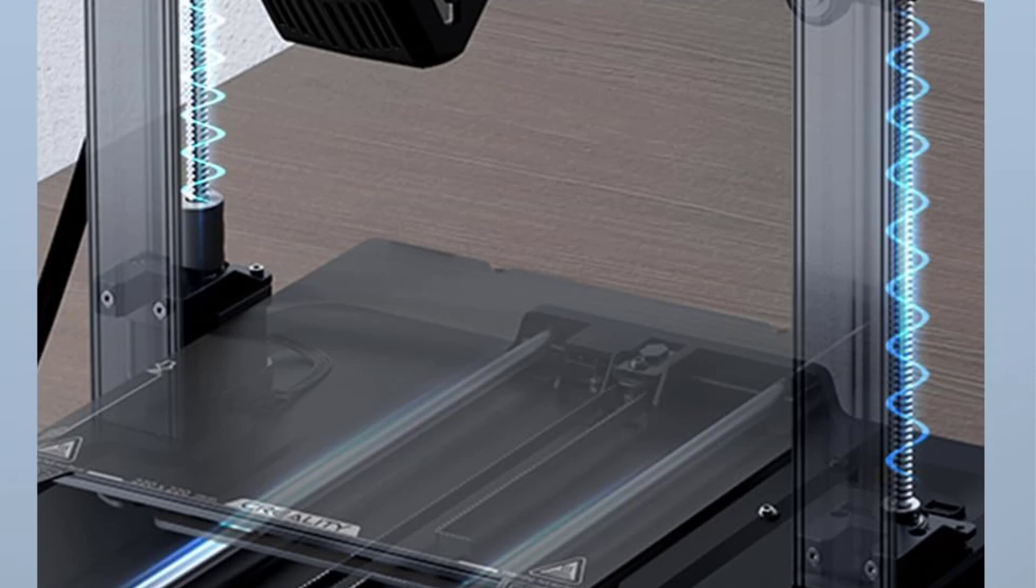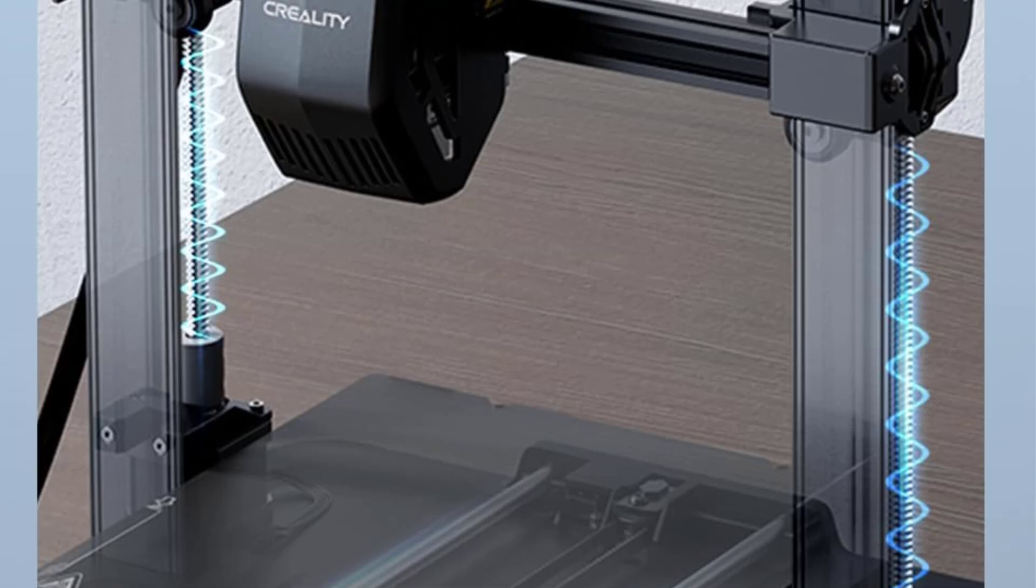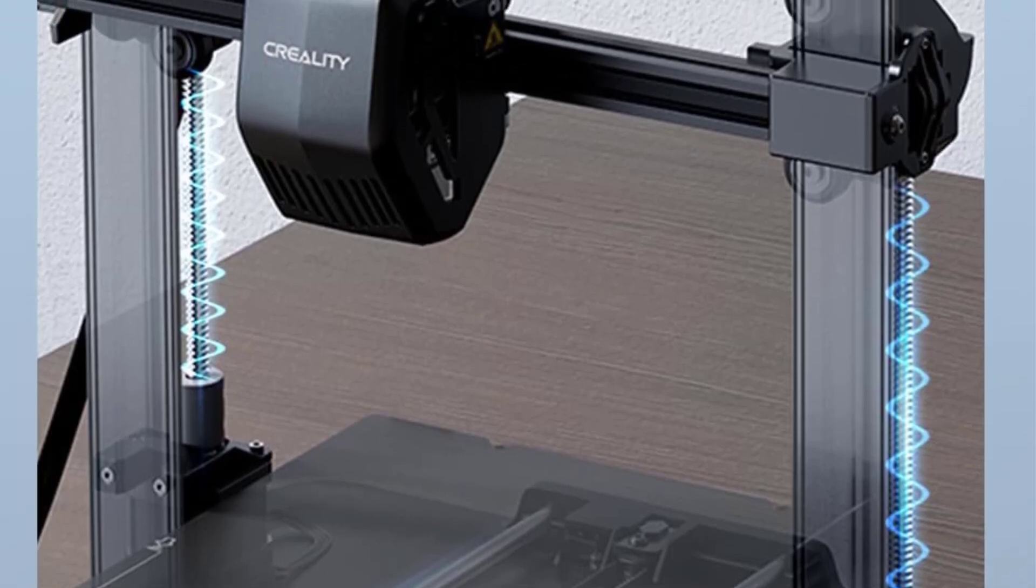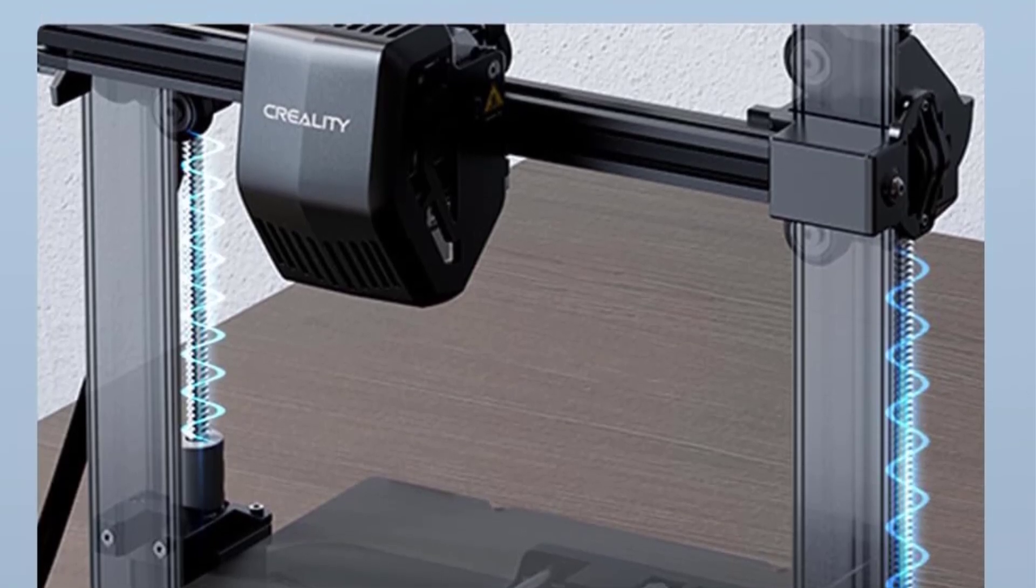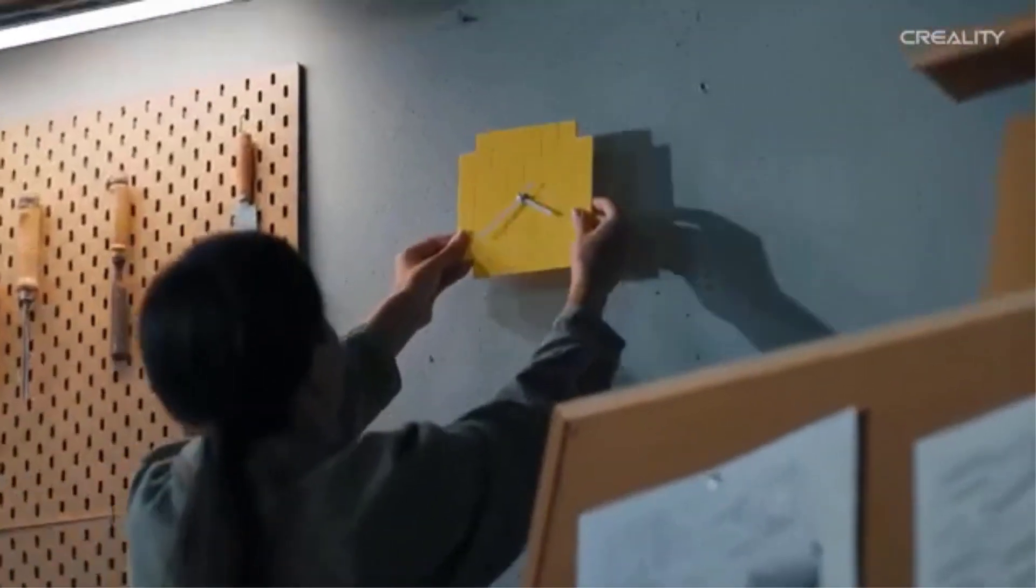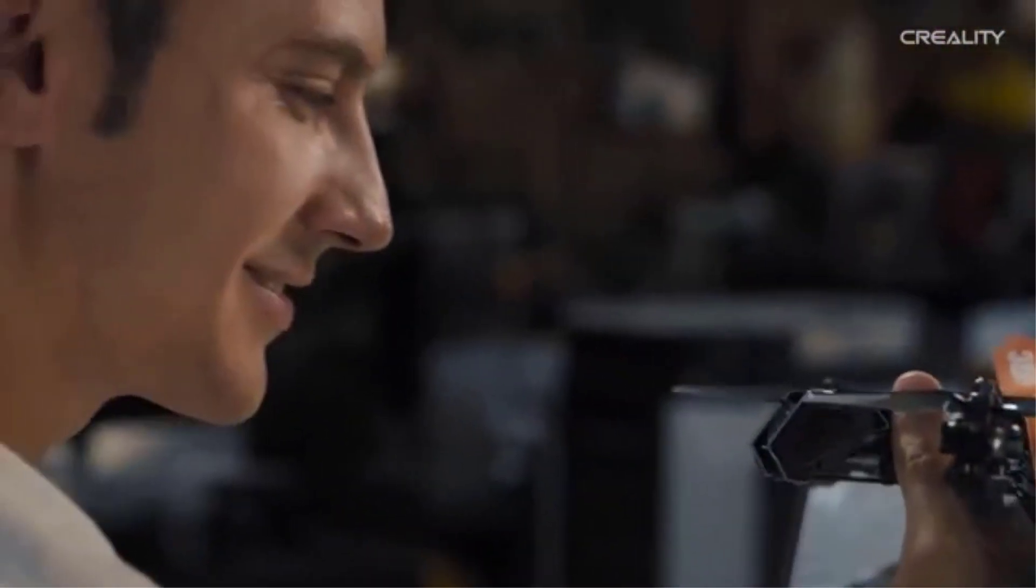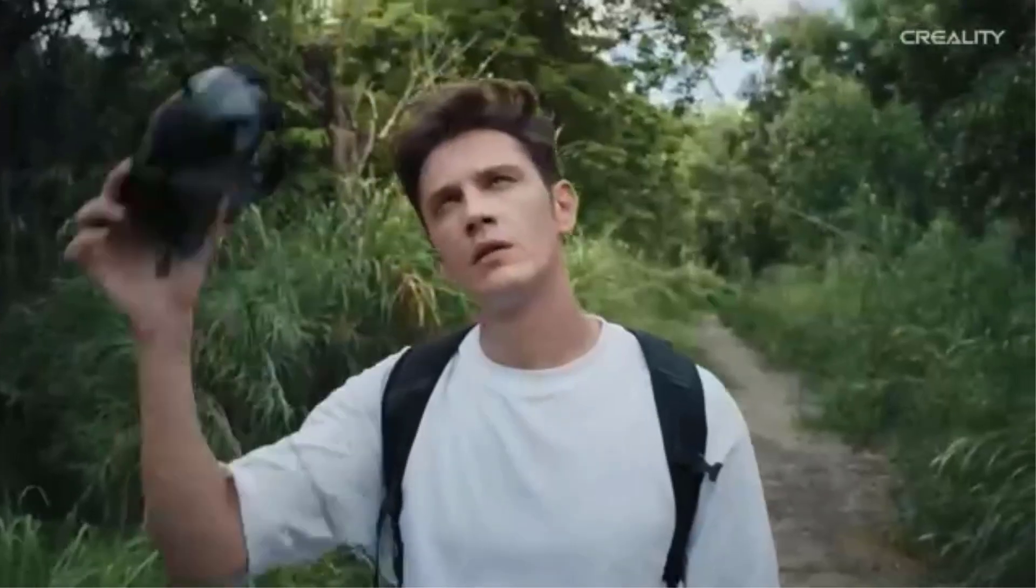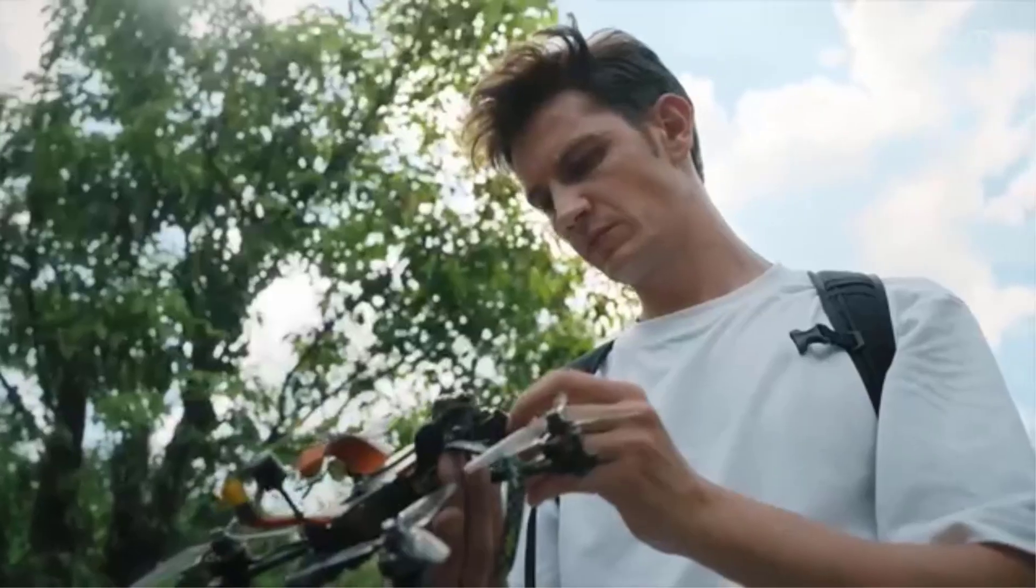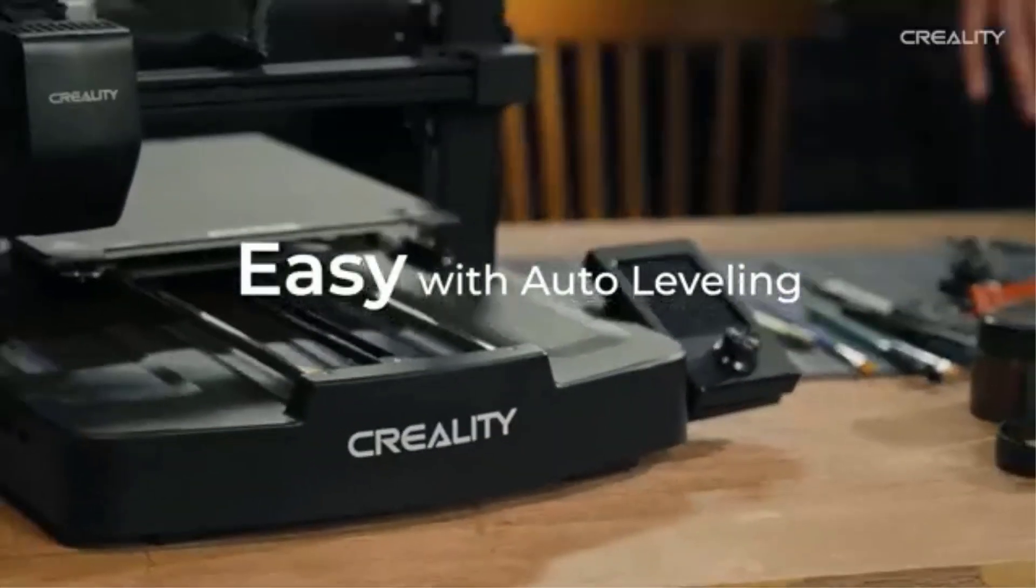The Ender 3 V3 SE retains Creality's open-source philosophy, meaning users can modify and upgrade the printer over time. It also supports silent stepper motor drivers, reducing noise levels for quieter operation. The user-friendly interface, coupled with the quick assembly process, makes setup straightforward. Overall, the Creality Ender 3 V3 SE is an affordable, high-speed 3D printer that offers advanced features like auto-leveling, a direct extruder, and dual-axis stability. It is an excellent choice for makers, hobbyists, and students looking for a reliable, customizable, and efficient 3D printing experience.